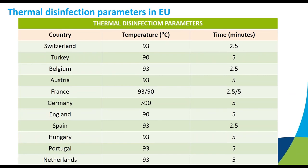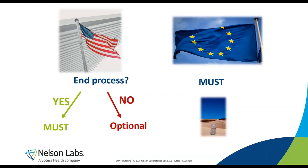Here is a slide giving an overview of different thermal disinfection parameters for different countries in Europe. The A₀ method is preferred in Europe, with values of five minutes at 90°C or two and a half minutes at 93°C being standard. This gives you an idea that the parameters are more or less aligned across European countries.